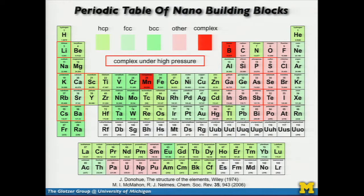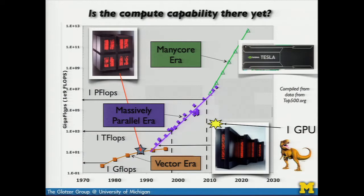Where we're going with this is: if we could understand all of these different attributes and how they conspire to drive new structures, we're really talking about a periodic table of nano building blocks — just like Henry this morning talked about a periodic table of neuromorphologies. We can start thinking about replacing the atomic elements of the periodic table with nanoparticles, getting a much higher dimensional space of possibilities. And is the computing capability there yet? I am here to argue that yes, it is.